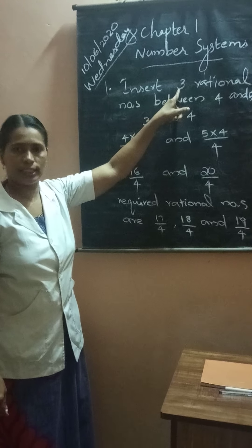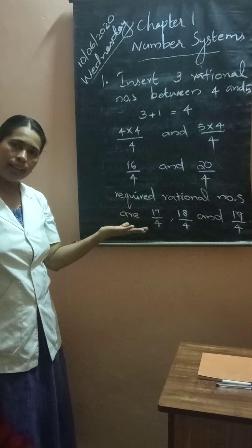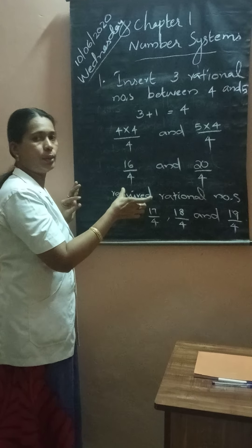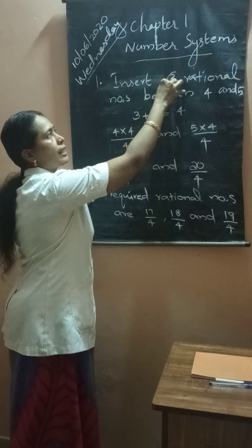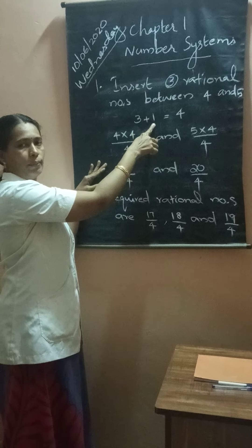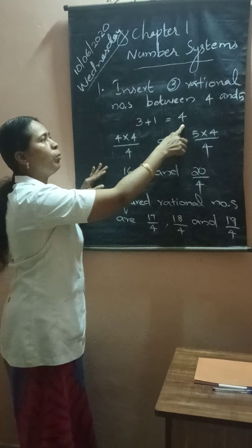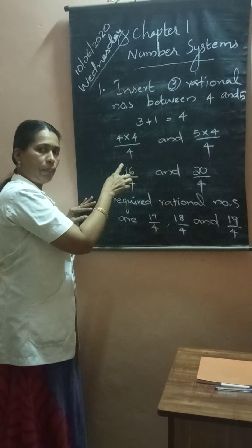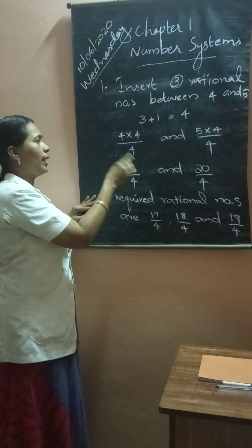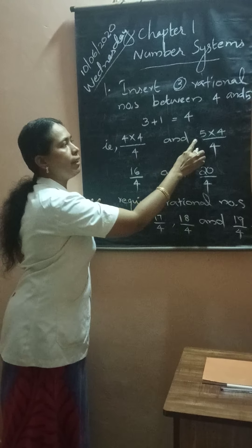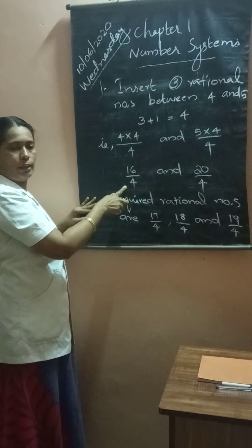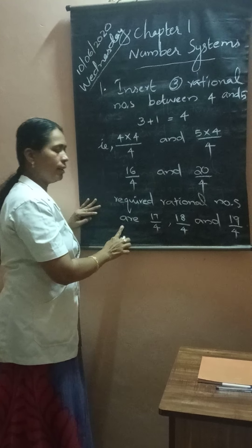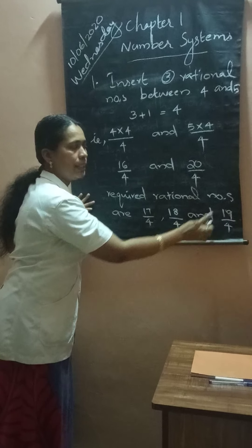In order to insert 3 rational numbers, the teacher has already given a method, but this year we are going to study how to insert the exact required numbers. We need 3 rational numbers, so add 3 plus 1 to get 4. Then multiply and divide the given numbers 4 and 5 by 4. That is, 4 × 4 by 4 and 5 × 4 by 4. So it becomes 16 by 4 and 20 by 4. The required rational numbers are 17 by 4, 18 by 4, and 19 by 4.